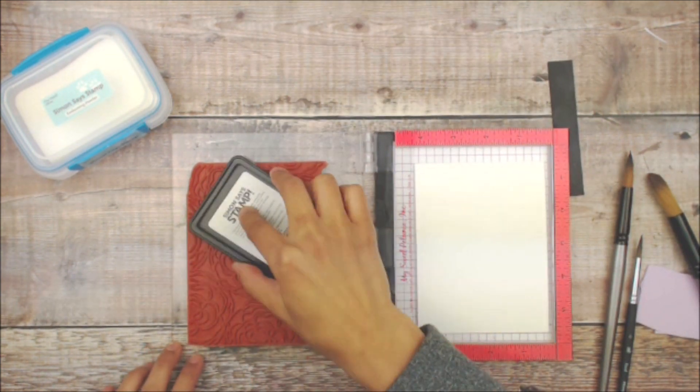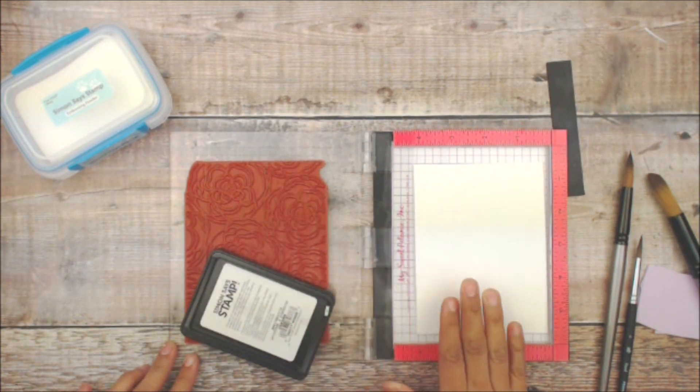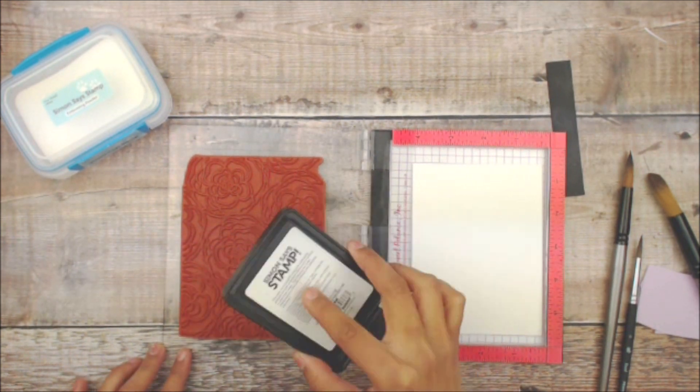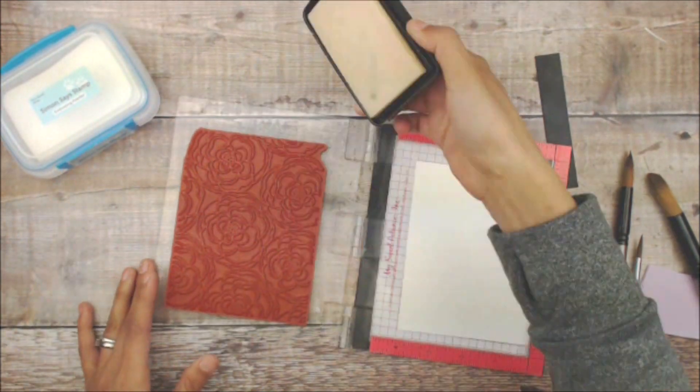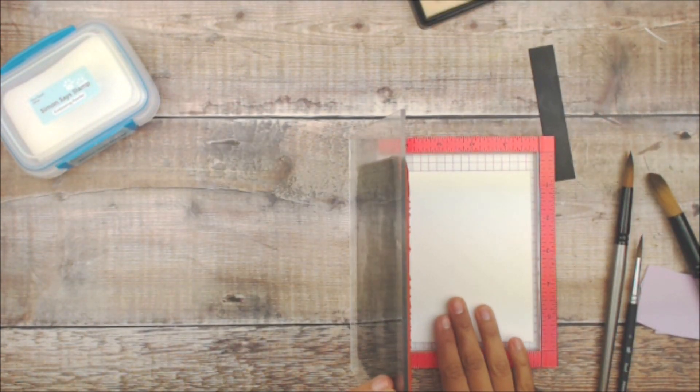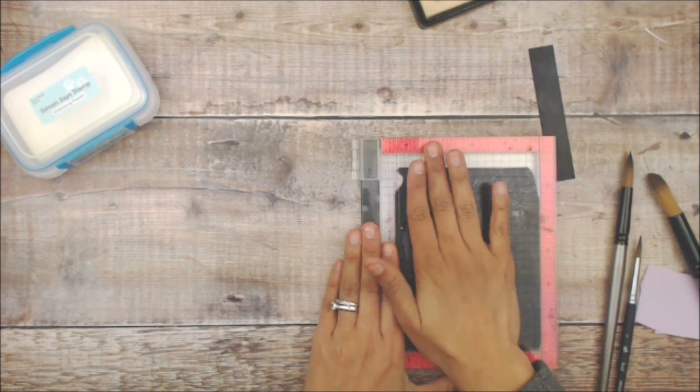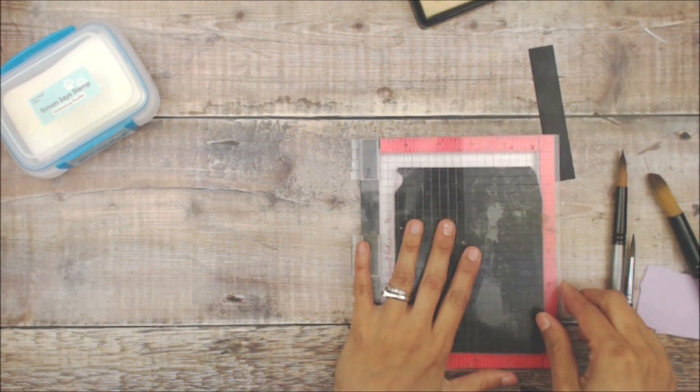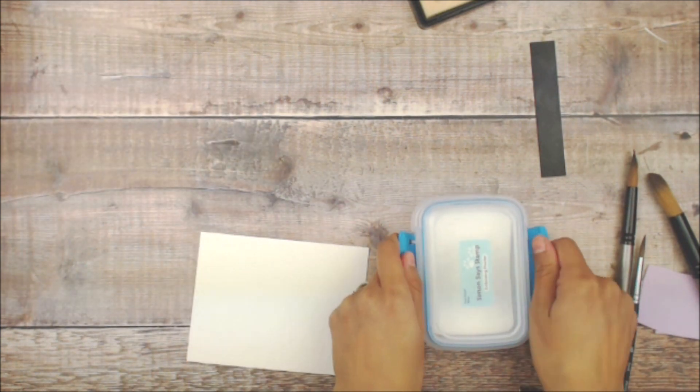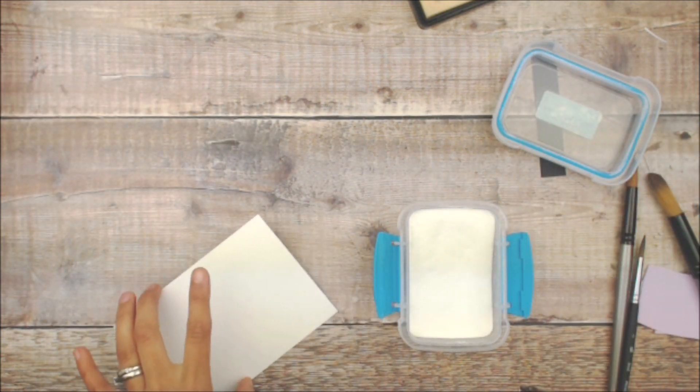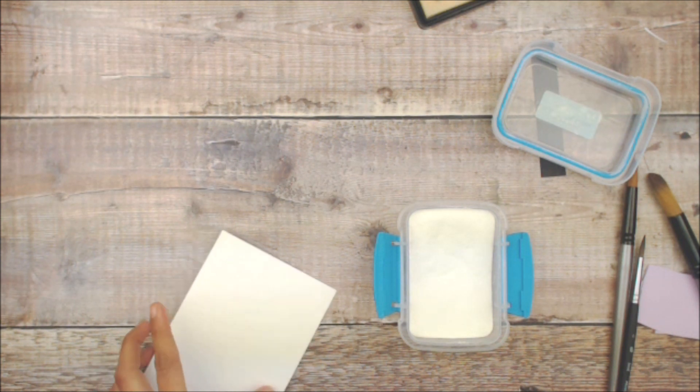We're going to begin by stamping the clear embossing ink onto that background, Obsessed with Florals. I'm just going to ink it really good, reposition my paper, stamp that, press pretty hard. I'm pretty happy with it. You see I only had to do it once, and that's part of rubbing that stamp with that sand eraser.